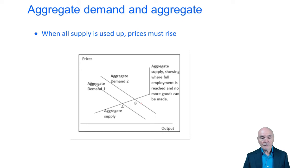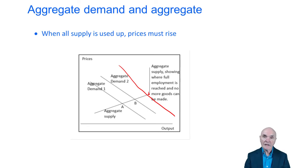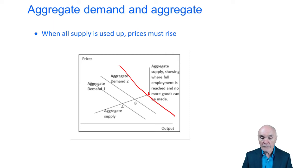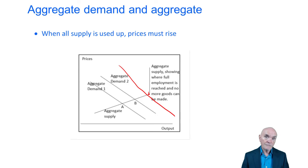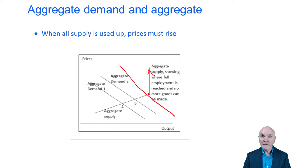This process can continue until full employment is reached and no more goods can be made. We then have increasing demand but a fixed number of goods — much competition for these goods — and prices rise until demand and supply match again, but at a much higher price. This basically causes inflation. If there are too many people chasing too few goods, the price of those goods will go up, and that is a cause of inflation.